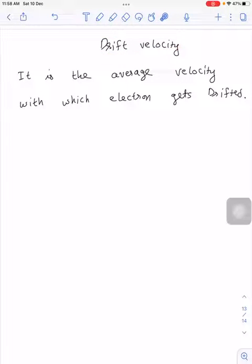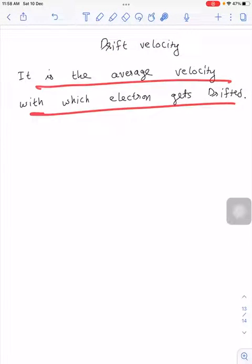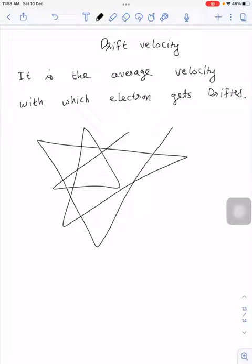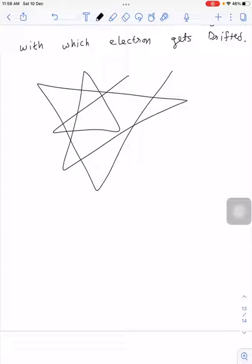It is an average velocity with which electron gets drifted. Electrons follow random motions and exact paths. If no electric field is supplied to it, average velocity of all the electrons will come out to be zero.